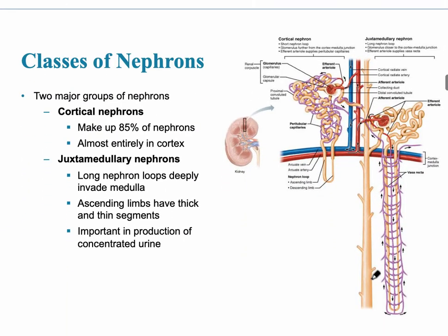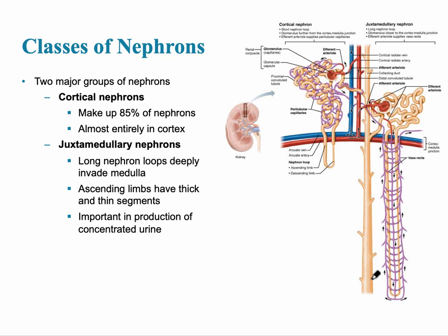There are two different classes of nephrons in the body: cortical nephrons and juxtamedullary nephrons. Cortical nephrons make up about 85% of nephrons in our body, which helps differentiate us from other species. Other species that cannot easily access water have more juxtamedullary nephrons. Only about 15% of our nephrons are juxtamedullary nephrons.